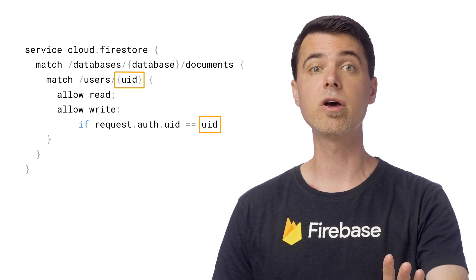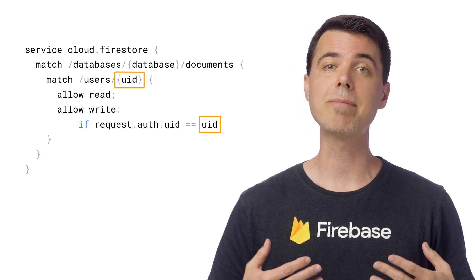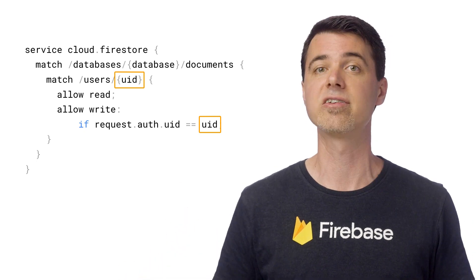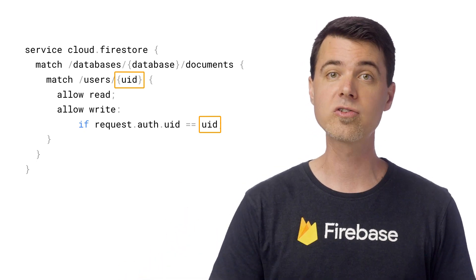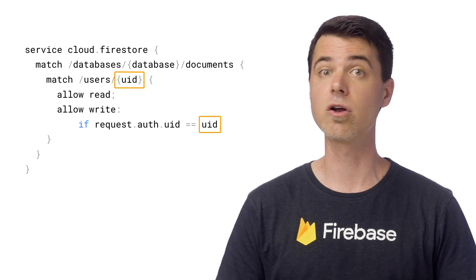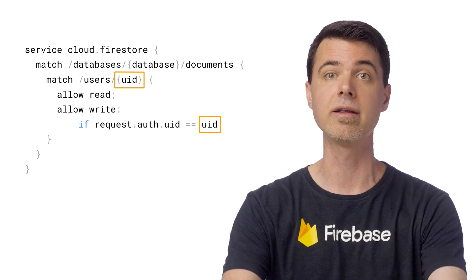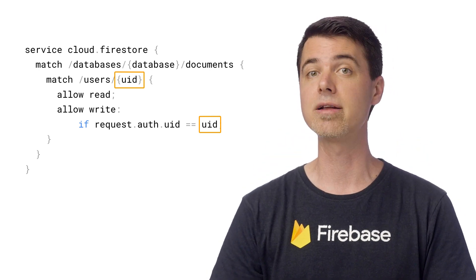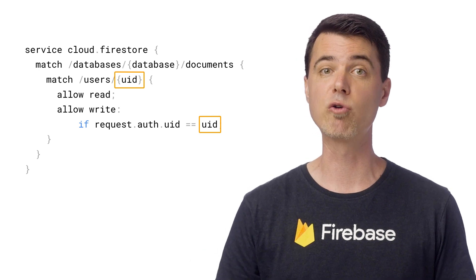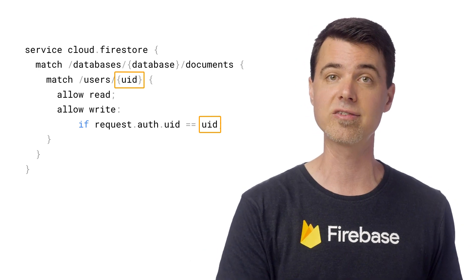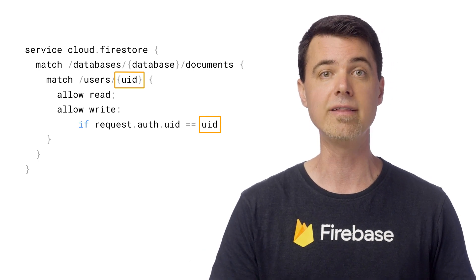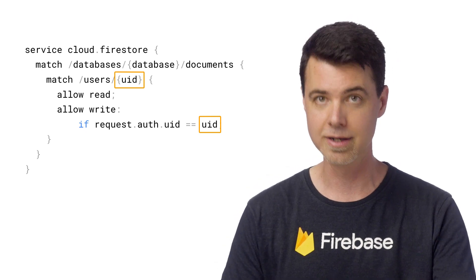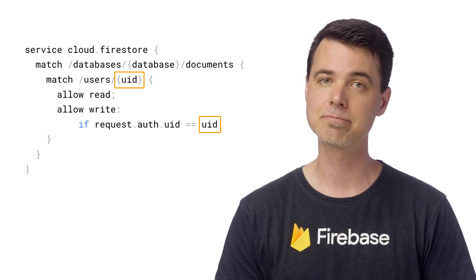It's important to note here that these wildcards can only match an entire path segment between the nearest slashes in the path. There are no substring matches, and there are no regular expressions either, but there is a glob-type wildcard, which I'll talk about later. And you can perform additional checks against the wildcard variable string in the allow expressions, including regular expressions. But that's another topic for another video.